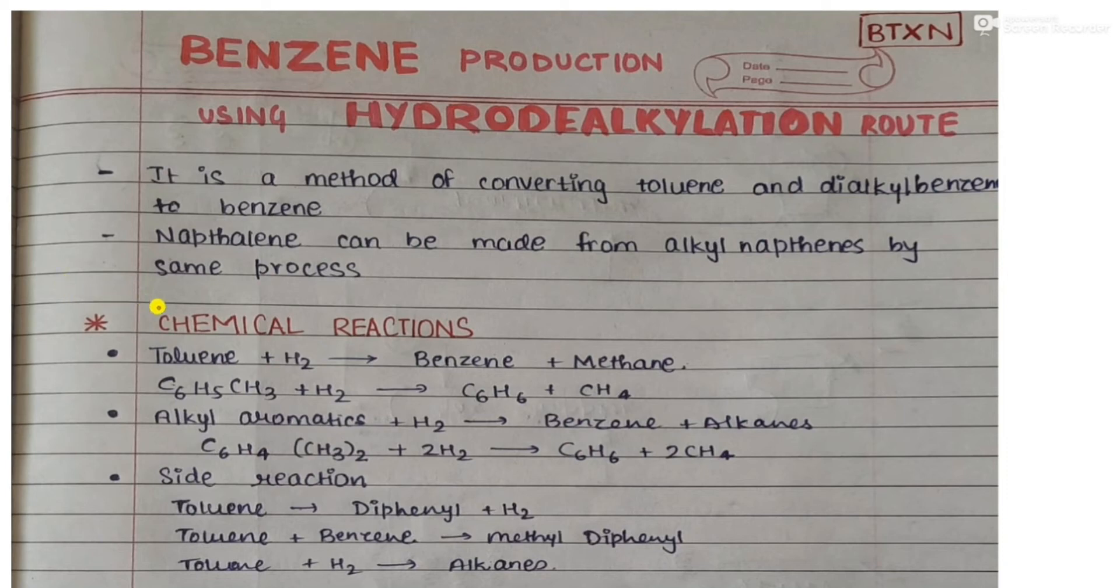It is a method of converting toluene and dialkyl benzene to benzene. Naphthalenes can also be produced by the same process from alkyl naphthanes. The chemical reactions are: toluene plus hydrogen gives benzene plus methane, and alkyl aromatics plus hydrogen gives benzene plus alkanes.